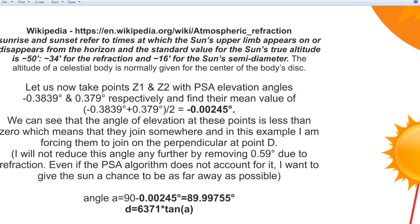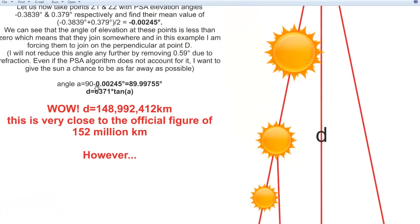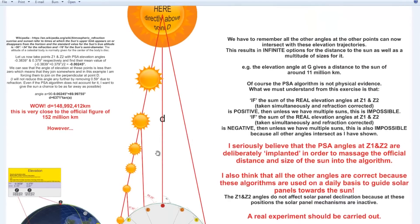Let us now take points Z1 and Z2 PSA elevation angles, respectively, and find the mean value of this very small angle. We can see that the angle of elevation of these points is less than zero, which means that they join somewhere. And in this example, I'm forcing them to join on the perpendicular at point D. I will not reduce this angle any further by removing 0.59 degrees due to refraction, even if the PSA algorithm does not account for it. I want to give the Sun a chance to be as far away as possible. This is the angle, alpha. Angle A is 19 minus the negative angle of elevation at point Z. Using this simple equation, we can find the distance to the Sun, which we find to be 148 million kilometers away. And this is very close to the official figure of 152 million kilometers.